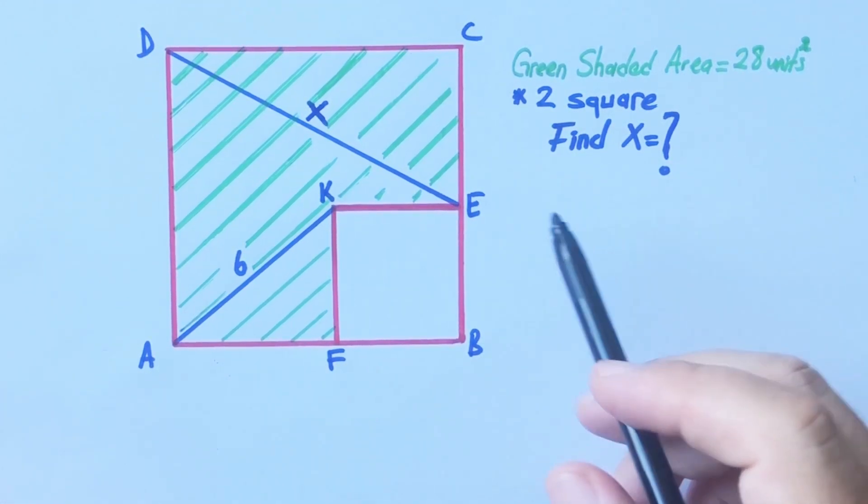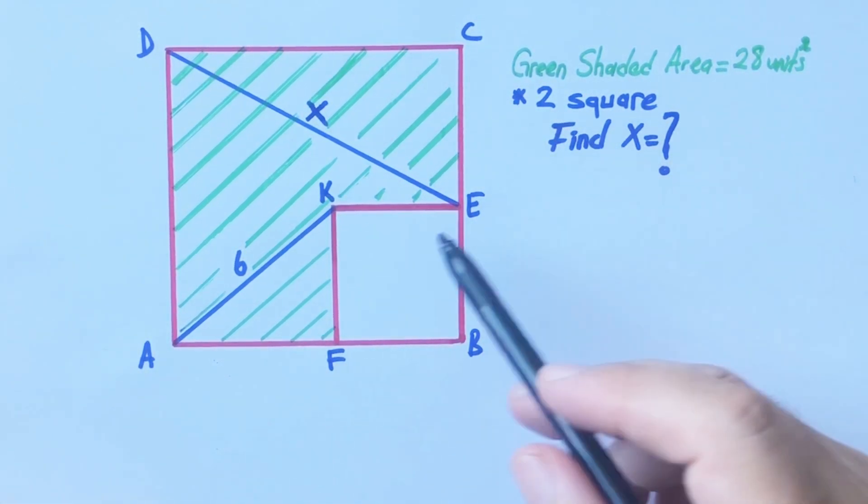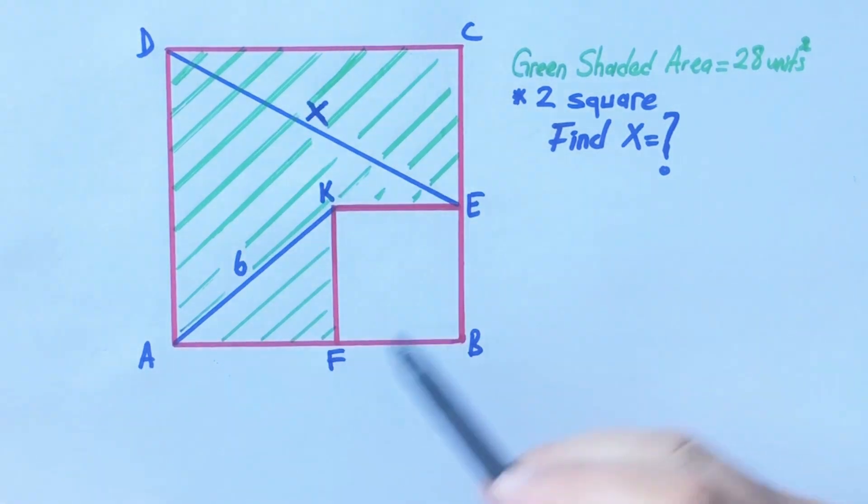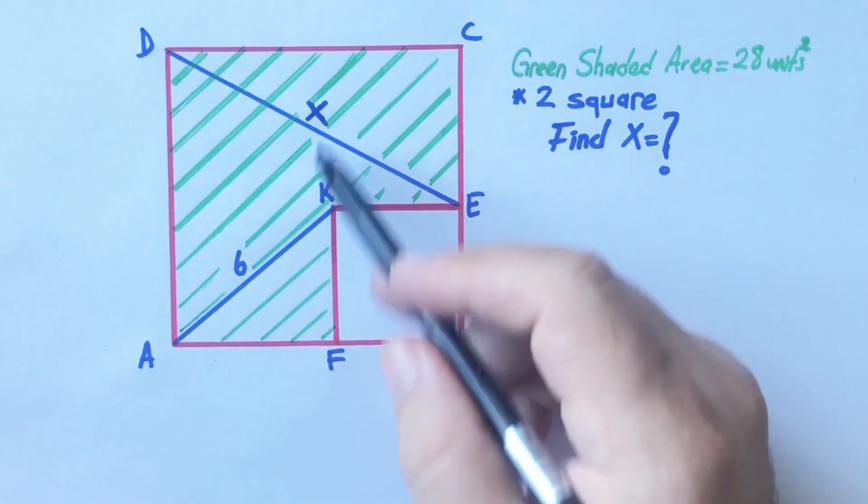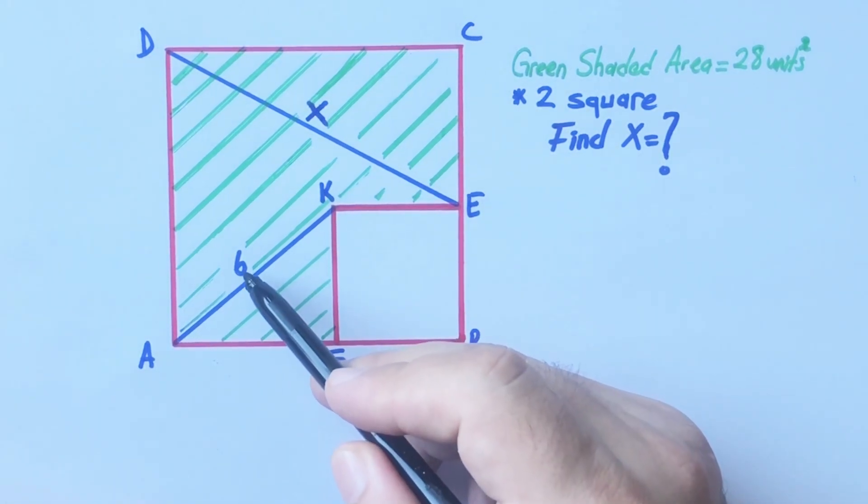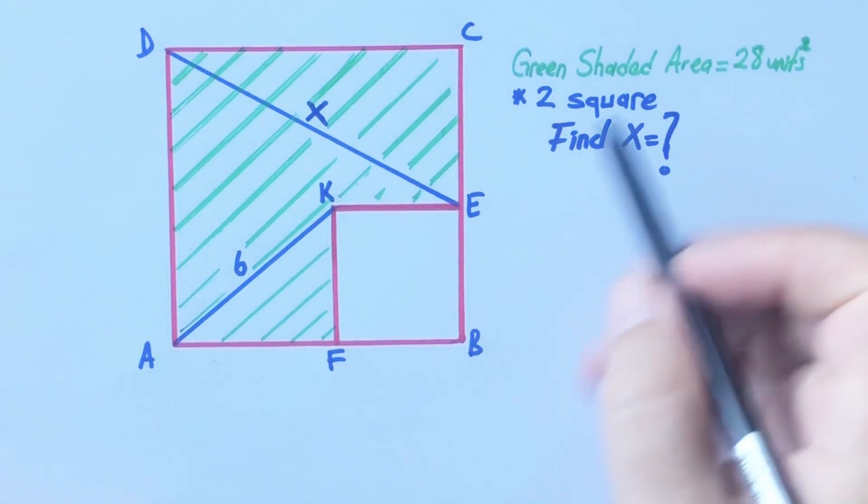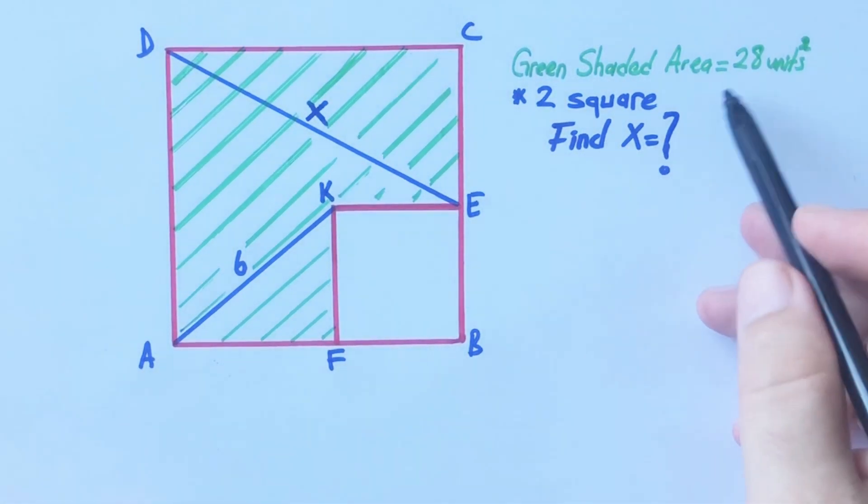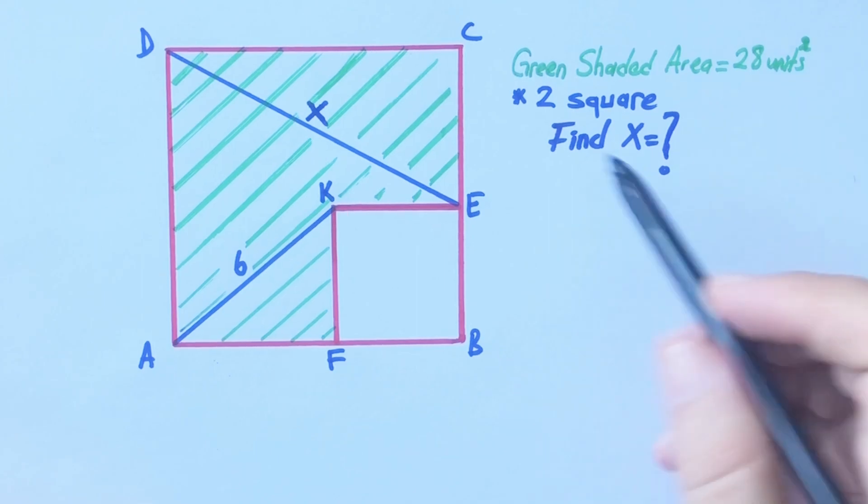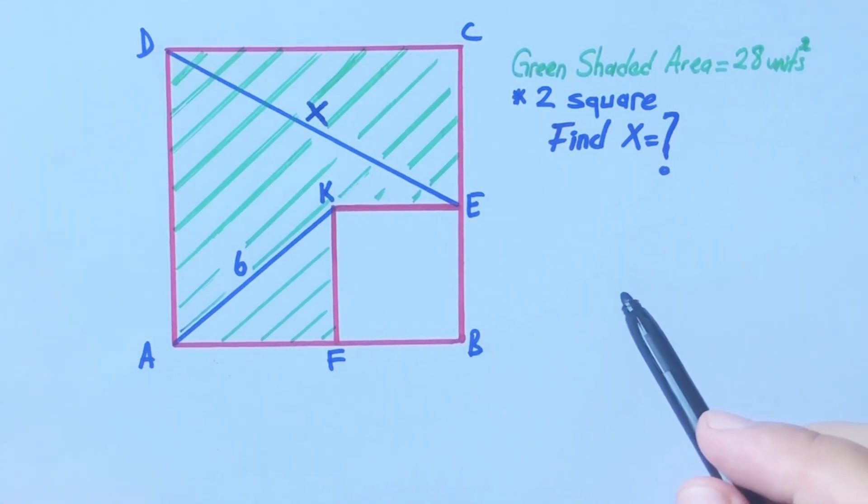Hello everyone, in this video we have two squares and this length is X. Here is 6 units, and then the green shaded area is given as 28 unit square. Now we are going to calculate the value of X.